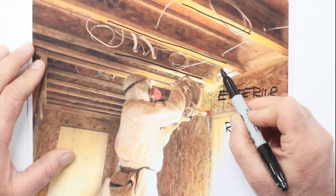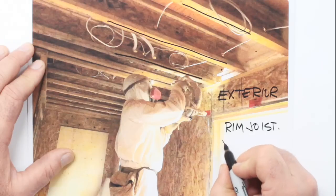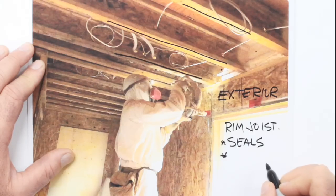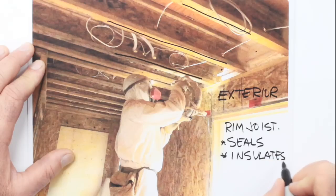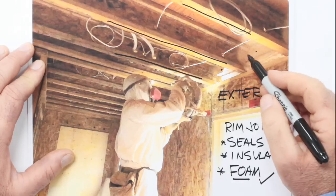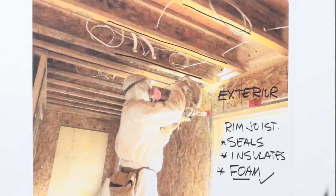Now, foam does a couple of things that are unique here. First, it seals against water vapor infiltration, and it also insulates too, in one go. Closed-cell spray foam insulation is really the only option that seals and prevents condensation in rim joist applications in cold heating climates like this.